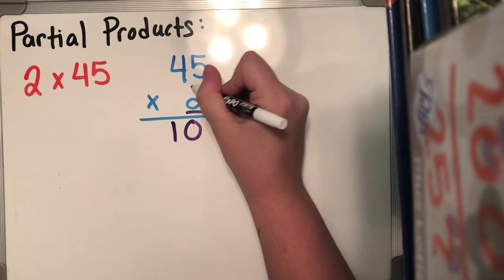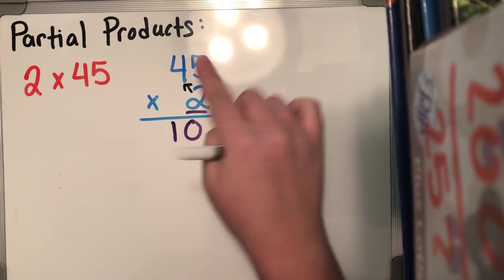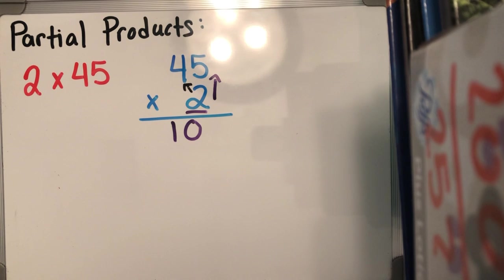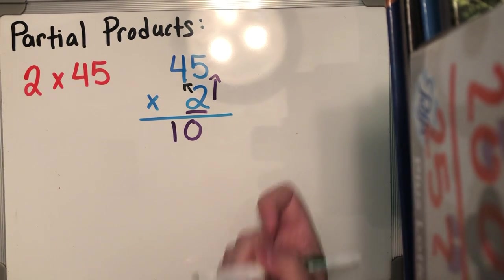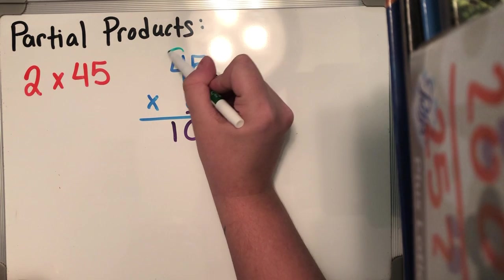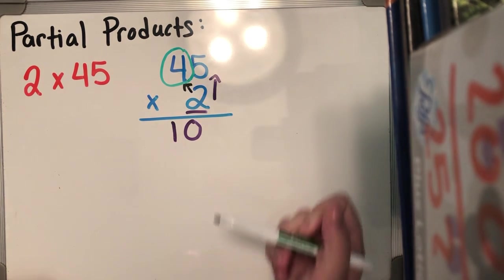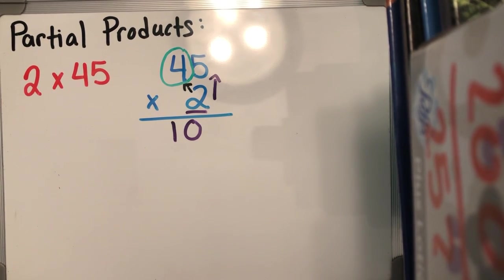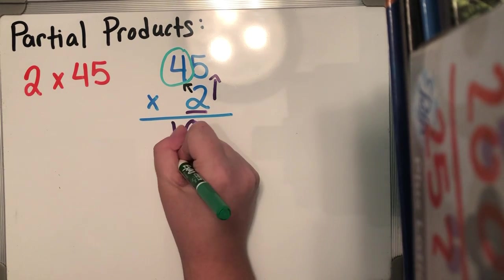Then I'm gonna go across. Remember, this is the tens place. It's no longer just two times four. This is two times 40 because the four is really in the tens place. So two times 40 is 80.